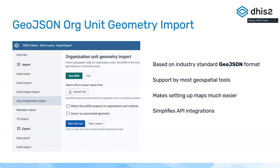The new importer is much more lightweight and is based on the GeoJSON format, which is now used by tools like Mapbox, ArcGIS, QGIS, and others. It also allows for moving your geospatial data between these different systems, making it much easier to set up maps and simplifying integration with existing GeoTools, since we're now conforming to what most of these systems use.